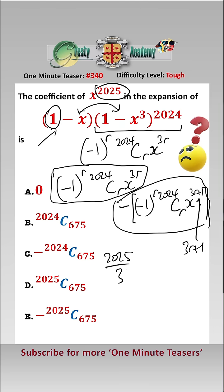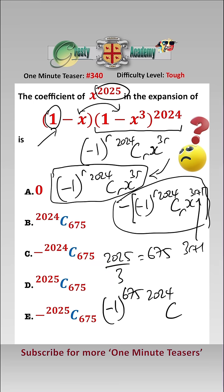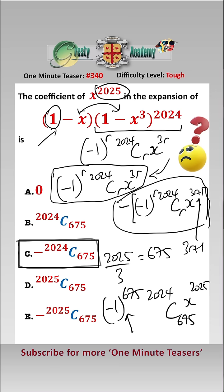2025 divided by 3 equals 675, so putting r = 675 gives us the term in x^2025, which is (-1)^675 · ²⁰²⁴C₆₇₅ · x^2025. Since (-1)^675 = -1, that gives us answer C.